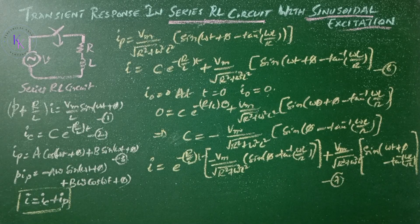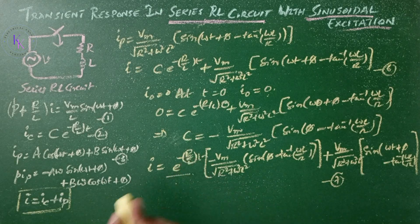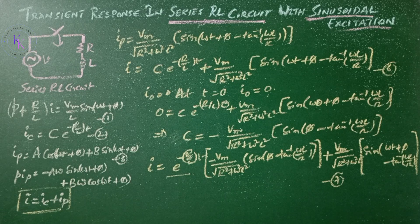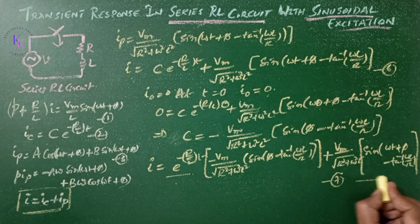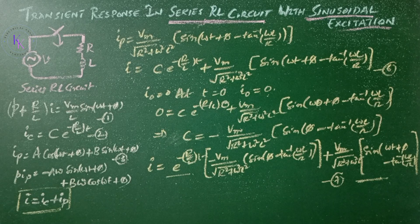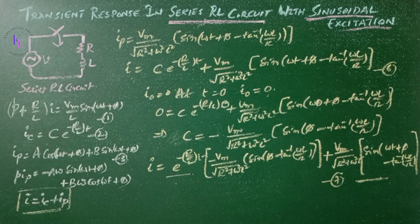The first part of the equation contains the exponential factor e^(−R/L·t), which becomes 0 at relatively short time as t increases — this is the transient term. The expression within the bracket depends on φ, that is the instant when the switch is closed. The second part of the equation is the steady-state current, which lags the applied voltage by an angle of tan⁻¹(ωL/R). This completes the transient response analysis of a series RL circuit with sinusoidal excitation.